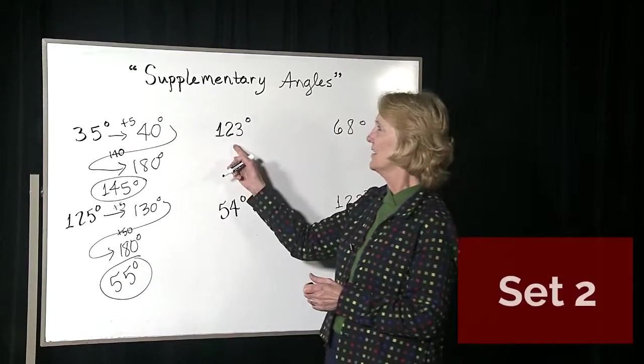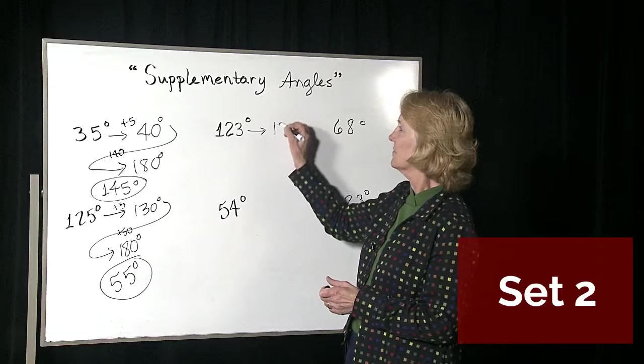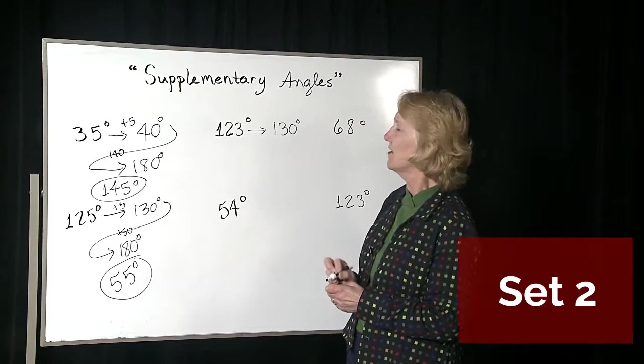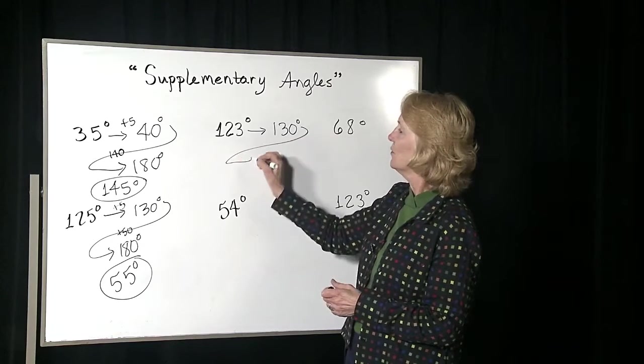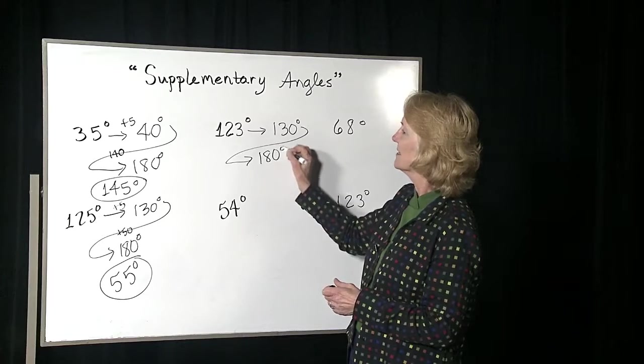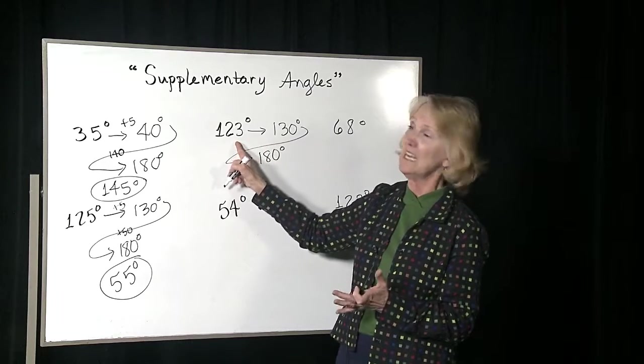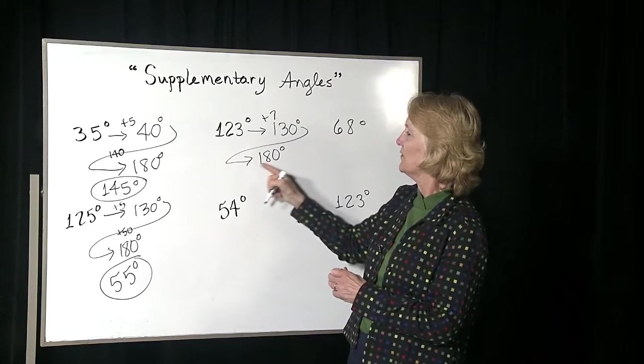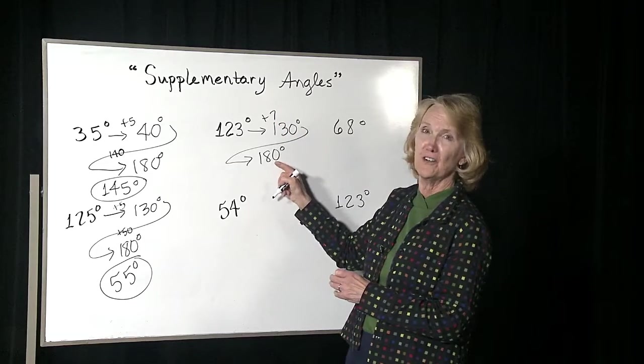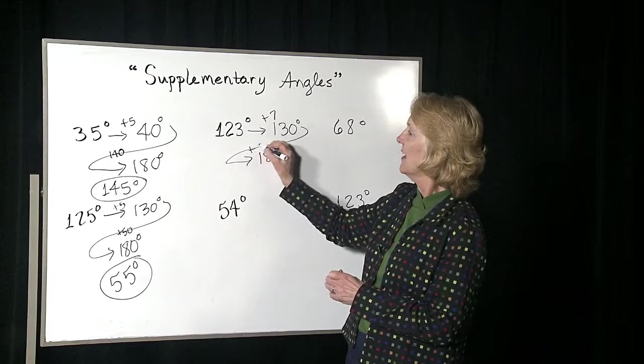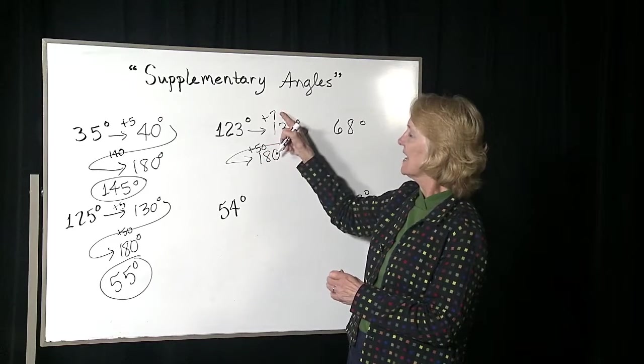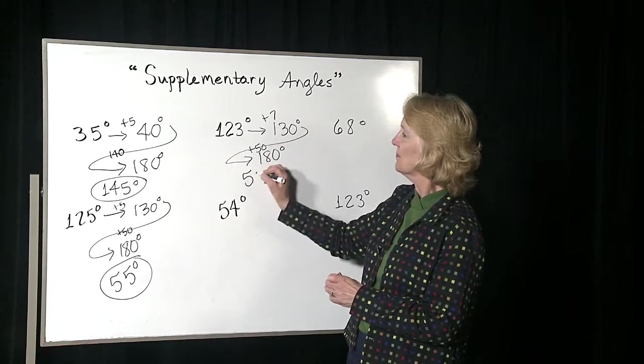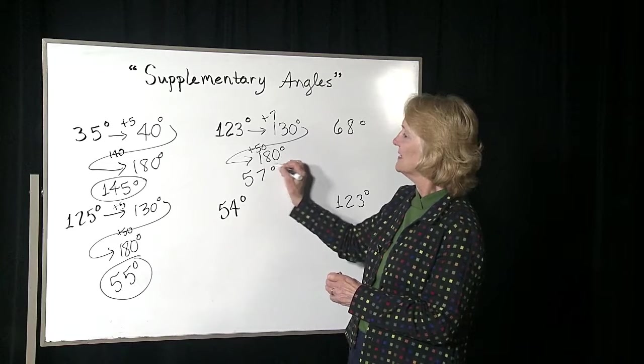If you're at 123 degrees, you go to the next multiple of 10, 130, and then you go to 180 degrees. What does 123 need to get to 130? You need 7. Once you have 130 and you need to get to 180, what do you add? You add 50. So you needed to add 7 and 50, so the supplementary angle is 57 degrees.